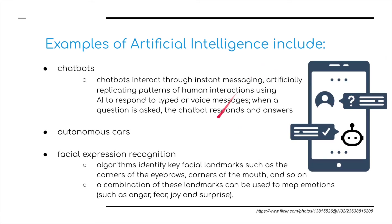Other examples could include chatbots. You may have used a chatbot while online — these interact through instant messaging, artificially replicating patterns of human interaction using AI to respond to typed or voice messages. When a question is asked, the chatbot responds and answers. Autonomous cars also use artificial intelligence. And facial expression recognition — algorithms identify key facial landmarks such as corners of the eyebrows and corners of the mouth. A combination of these landmarks can be used to map emotions such as anger, fear, joy, and surprise.